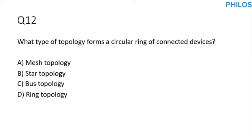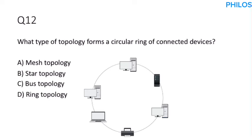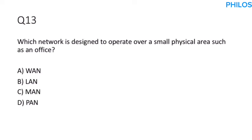Question twelve: What type of topology forms a circular ring of connected devices? A circular ring of connected devices — the correct answer is ring topology.